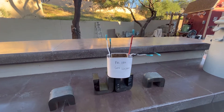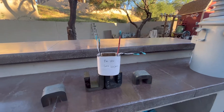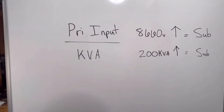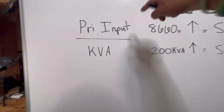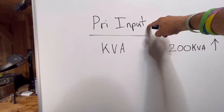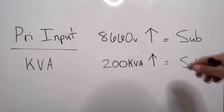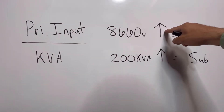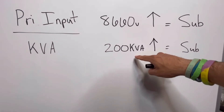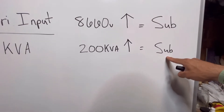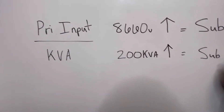So how do we decide which transformer is going to be additive or subtractive? It comes down to two pieces of information. The two pieces of information that determine whether a transformer is going to be wound subtractively or additively are the primary input voltage of the transformer and the KVA rating. All transformers that require 8660 volts and above will automatically be subtractive. Also, all transformers 200 KVA and above will automatically be subtractive. In order for a transformer to be wound subtractive, it only has to meet one of these qualifications.